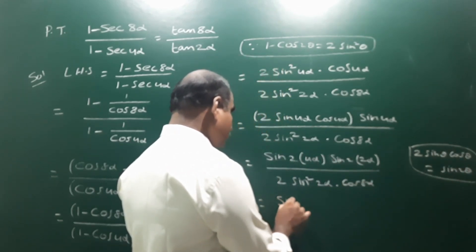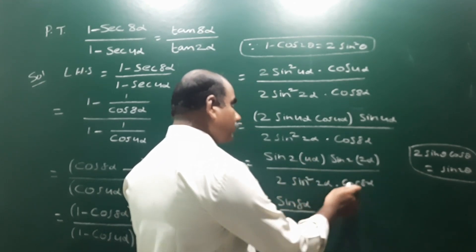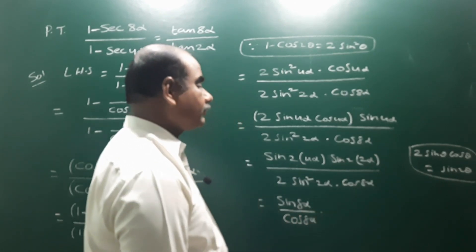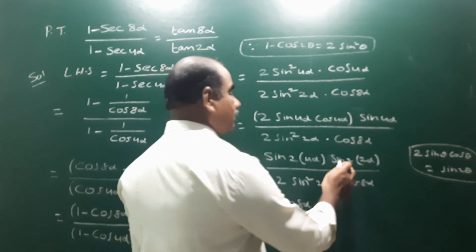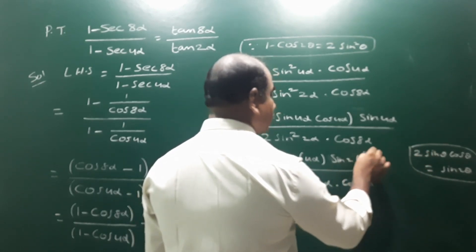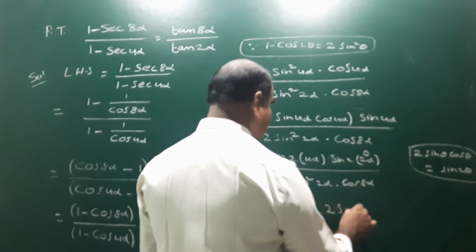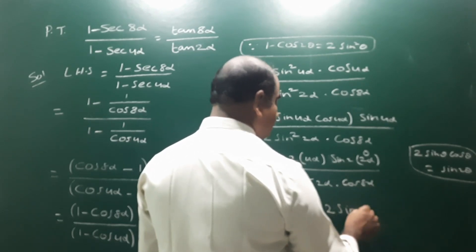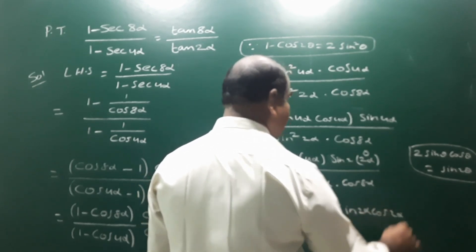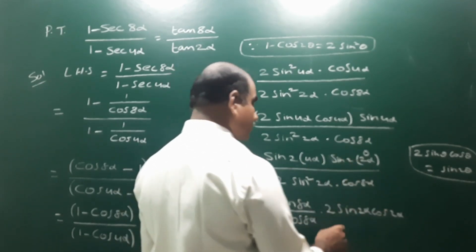Finally it becomes sin8α / cos8α in the numerator part. For the denominator, applying sin2θ = 2sinθcosθ with θ = 2α: sin4α = 2sin2α · cos2α. So 2sin2α · cos2α over 2sin2α gives cos2α, or equivalently the expression reduces to sin8α / cos8α divided by sin2α / cos2α.